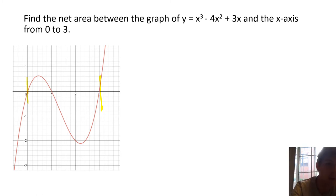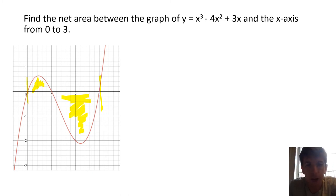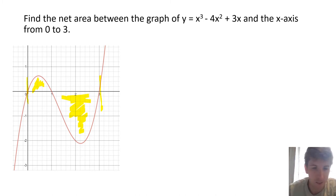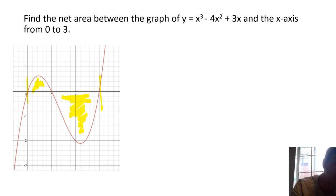Let's do another example. Looking at our two regions — one above and one below the x-axis — the vast majority of the function is below. So we expect this answer to be negative. If we get a positive number, we should go back and check. The majority of the function is below the x-axis, indicating the net area will be negative.